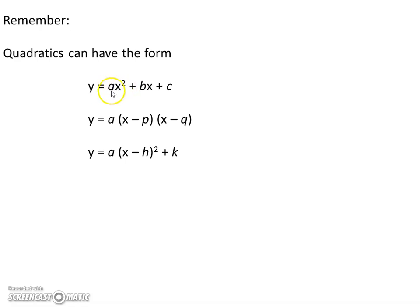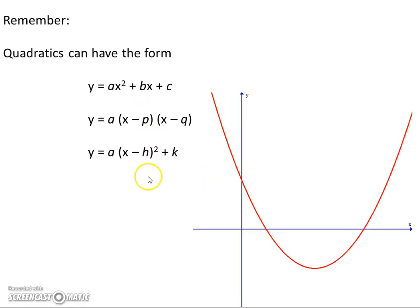Each of these letters, these coefficients if you will, will tell you different information about the quadratic curve. For example, a tells you about the width and the concavity of the parabola.